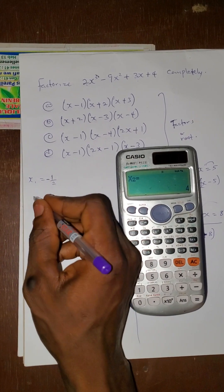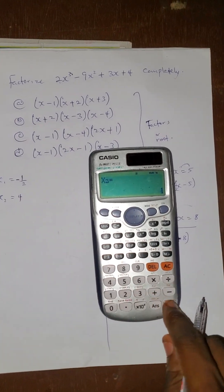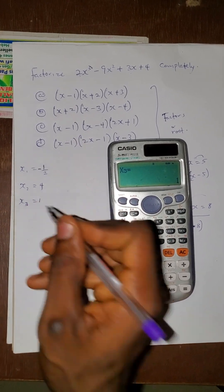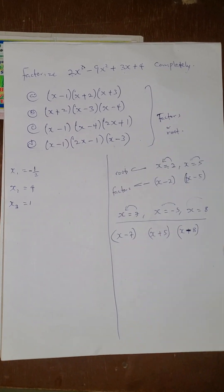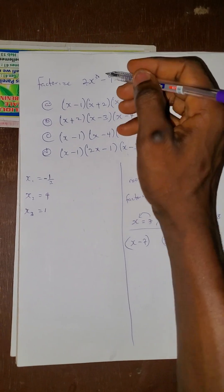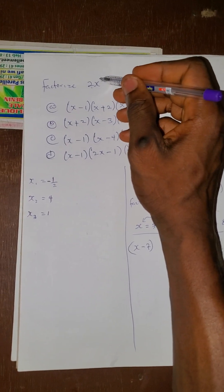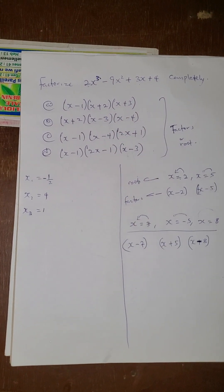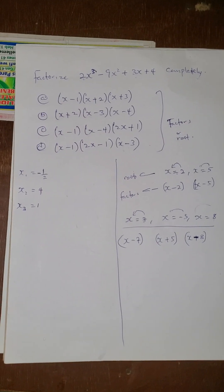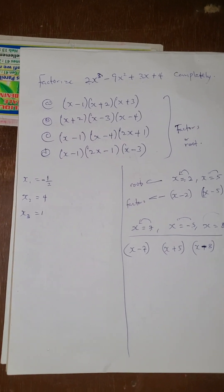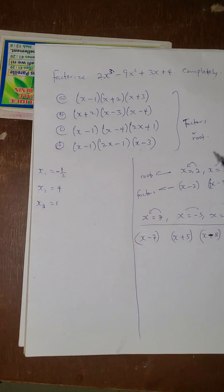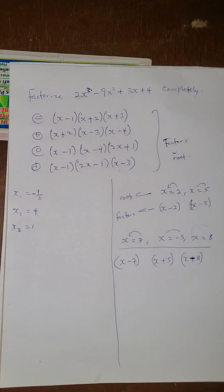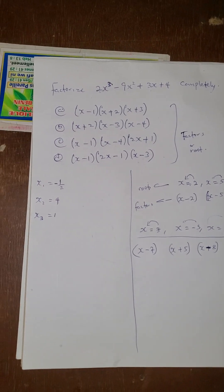People will ask how we know the number of x values we are going to get. The number of x values is determined by the highest power. Since the highest power here is 3, you must get 3 values of x. For a quadratic, the highest power is 2, so you always get two values. If the highest power is 4, you must get four values.